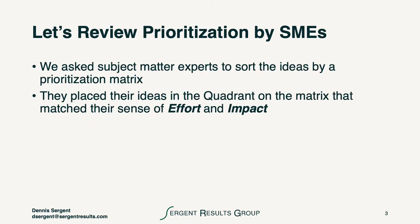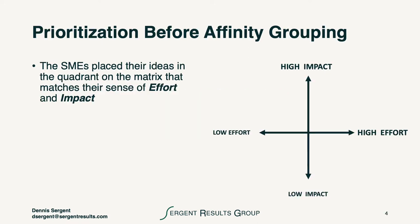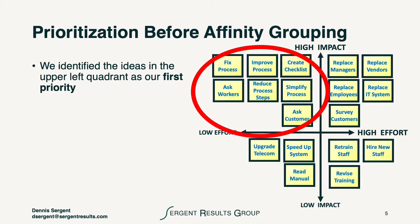Let's review the prioritization by subject matter experts. We've asked them to sort the ideas by a prioritization matrix. They've placed their ideas in the quadrant on the matrix that matched their sense of effort and impact. They basically determined if it was low or high effort, and whether it was low or high impact. We identified the areas in the upper left quadrant as our first priority, because they're low effort and high impact.